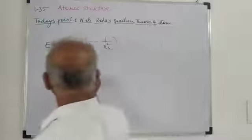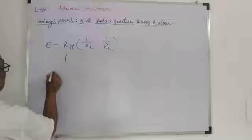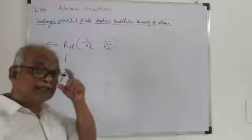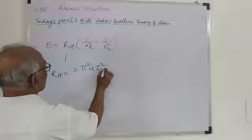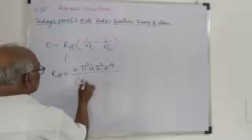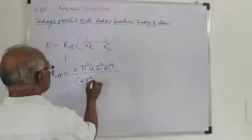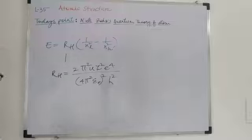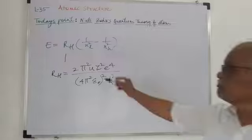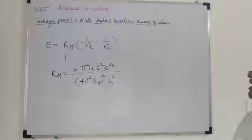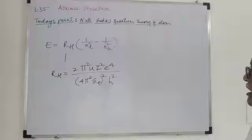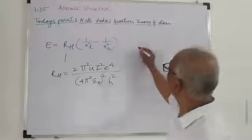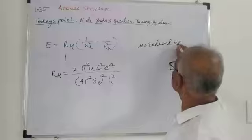The Rydberg constant RH for hydrogen is equal to a formula given by: 2π² × μ × Z² × e⁴ divided by 4π² × h². Here μ is the reduced mass, and this reduced mass μ is given by: 1/μ = (1/mass of electron) + (1/mass of nucleus).